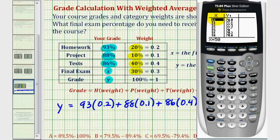Now we'll go to the table by pressing second graph. So again, X represents the final exam percentage and Y represents the course percentage. As we scroll through this table, we can see how any final exam percentage will affect the course percentage. So we'll go ahead and scroll up. Notice as the final exam percentage increases, so does the course percentage.